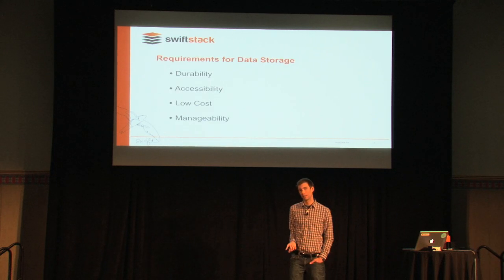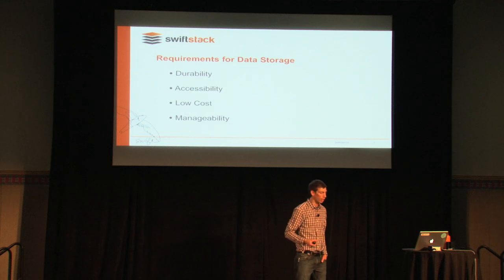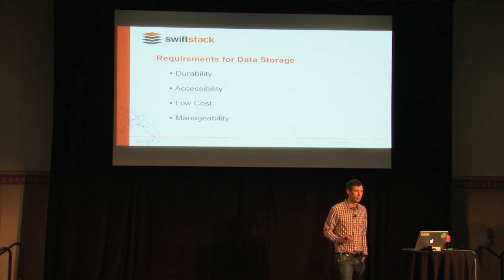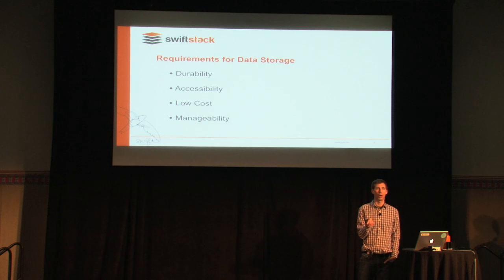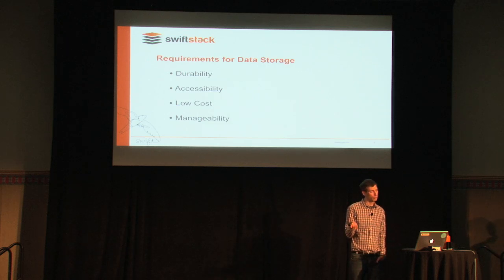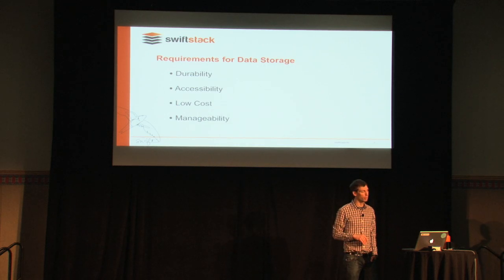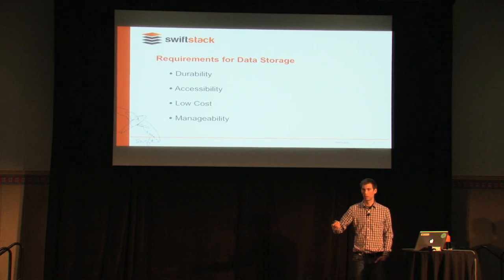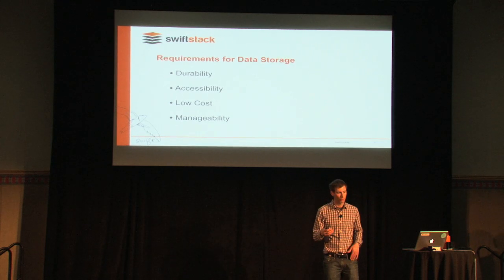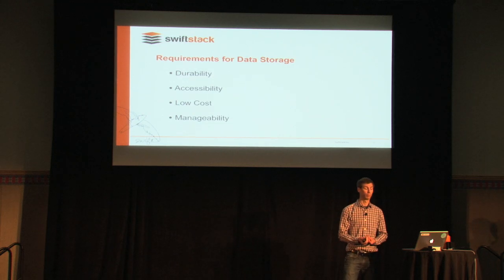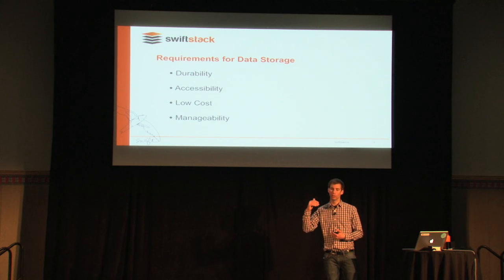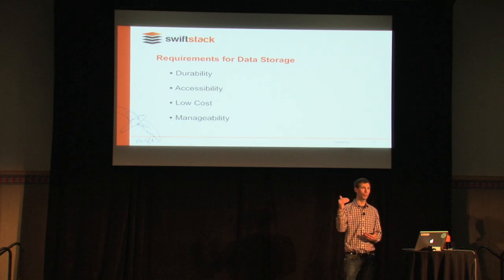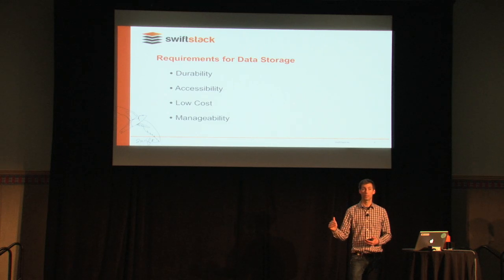When you have that much data, the demands on it are a bit different because this is unstructured data. One key property is durability — a user generates content or a scientist generates a genome, and the expectation is that it's going to be stored very durably. Next is accessibility: even though you took a picture seven years ago, Flickr still has to serve it to you.